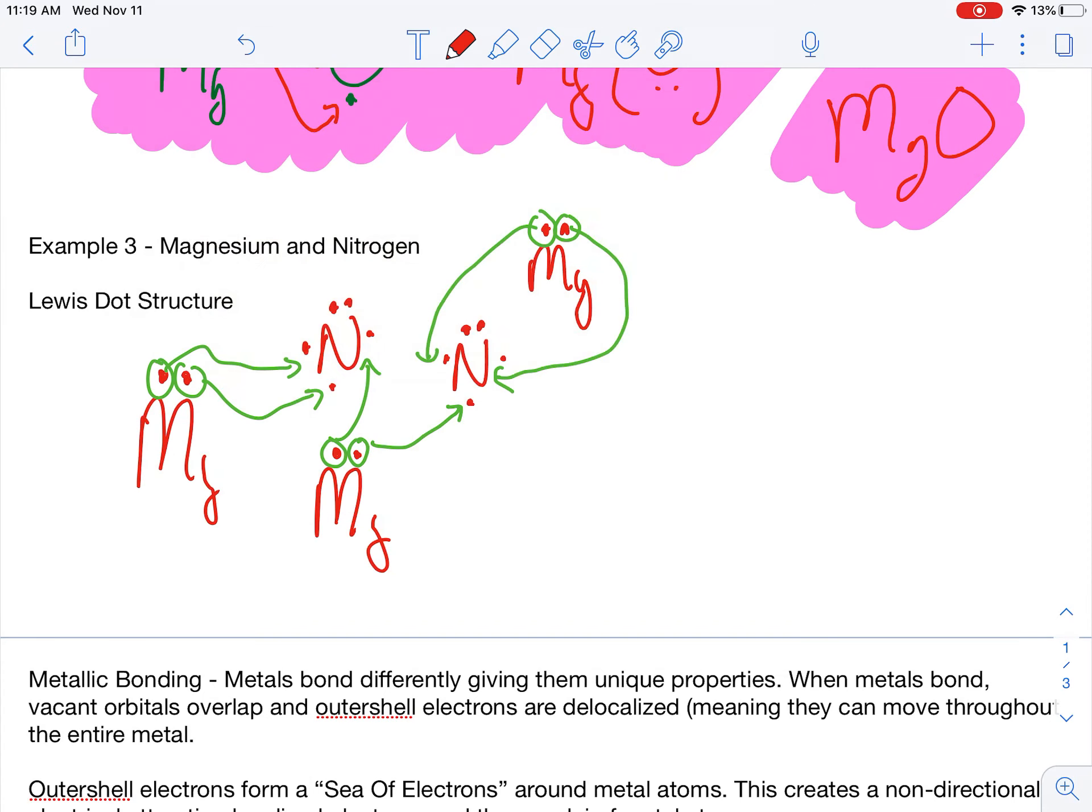This time, our resulting charges are a little bit different. I have three magnesiums, each of which has a two-positive charge, and I have two nitrogens with a three-negative charge. If we think about it, if I have three magnesiums with a two-positive charge, that's a total of six-positive, and two nitrogens with a three-negative charge, that's a total of six-negative. Here, my total positives cancel out my total negatives. My resulting formula unit is going to be Mg3N2.